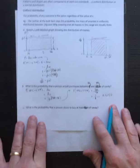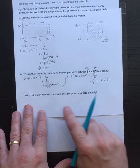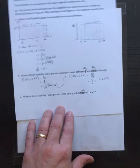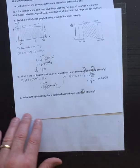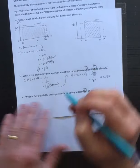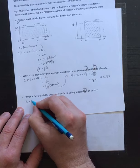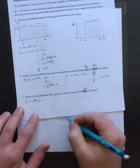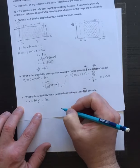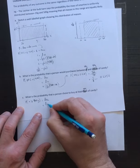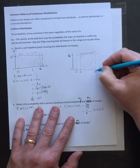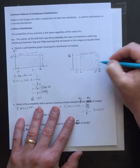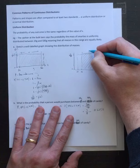Another worked example: what is the probability that a person chose to buy at least 400 grams of candy? If it's at least 400 grams, that means 400 grams or more, but the maximum is 500. So this is the probability that x is greater than or equal to 400 grams. That area is going to be length times width, and I'll sketch it on my graph from 400 to 500.